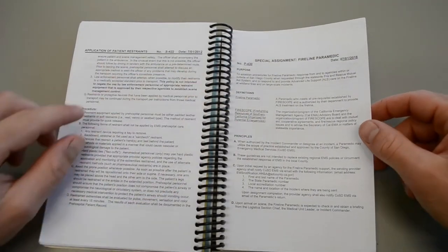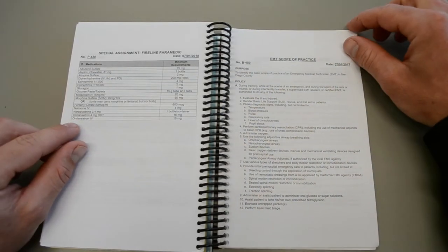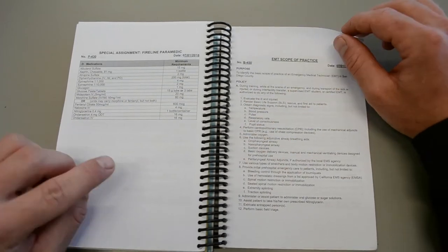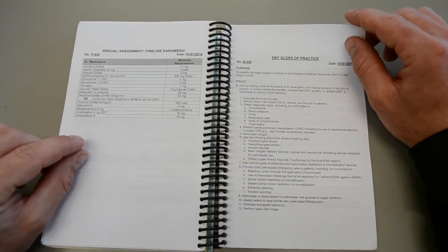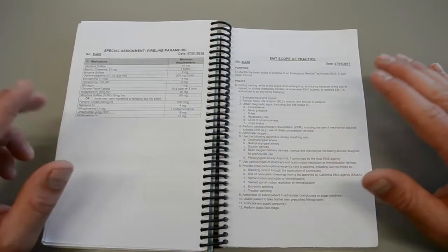Application of patient restraints. Fireline paramedic. This is a very important section. The EMT scope of practice. This tells you exactly what you can do in this county. If it's not written on here, you can't do it.